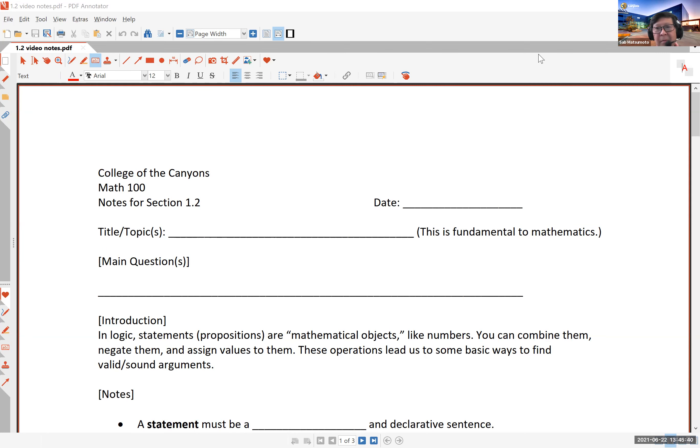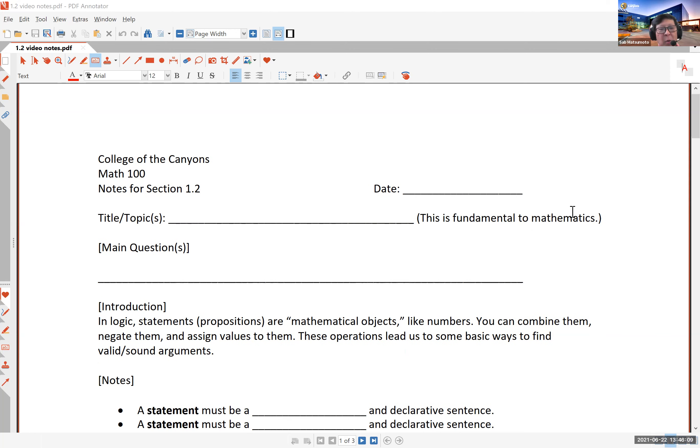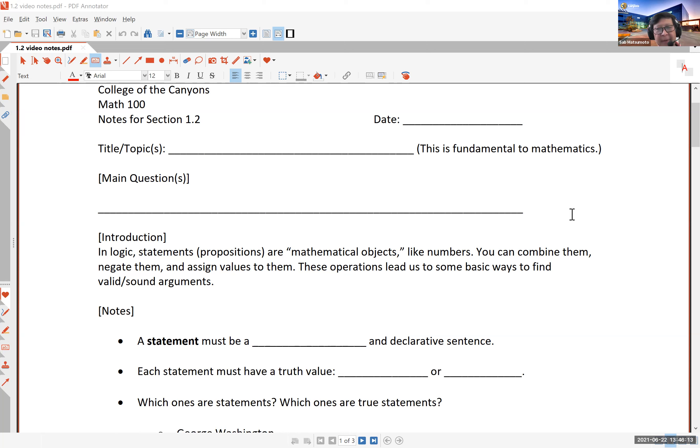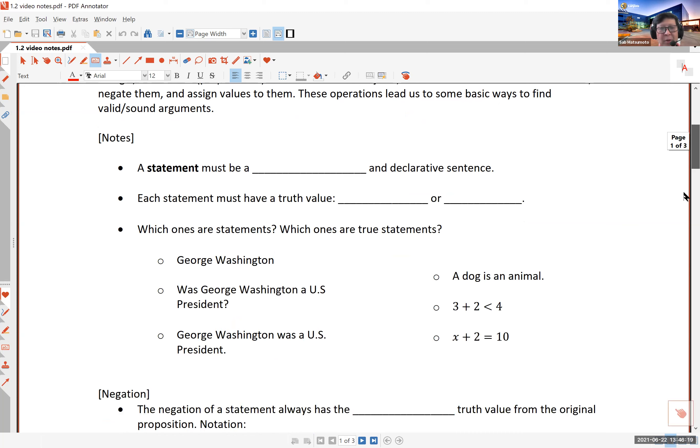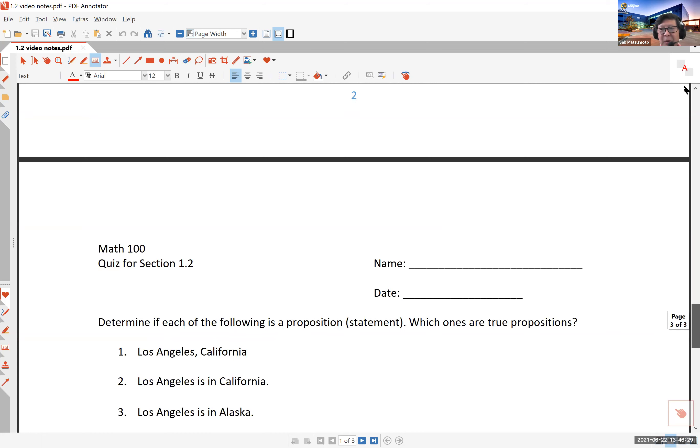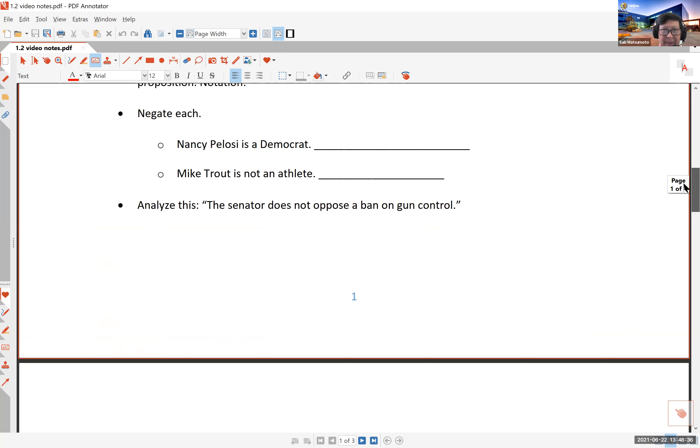So typically, before you start watching a lecture video, what you should do is go to the Canvas shell, go to that section, and print out these pages that are available to you as a PDF file. What you have is the notes that have lots of blanks, like the one you're seeing here. And for most lectures, you have two pages of notes for the content of that section, followed by a page of what is called a quiz for that section. Now, the idea is for you to take notes, fill in blanks, as you watch these lecture videos. And this is very important.